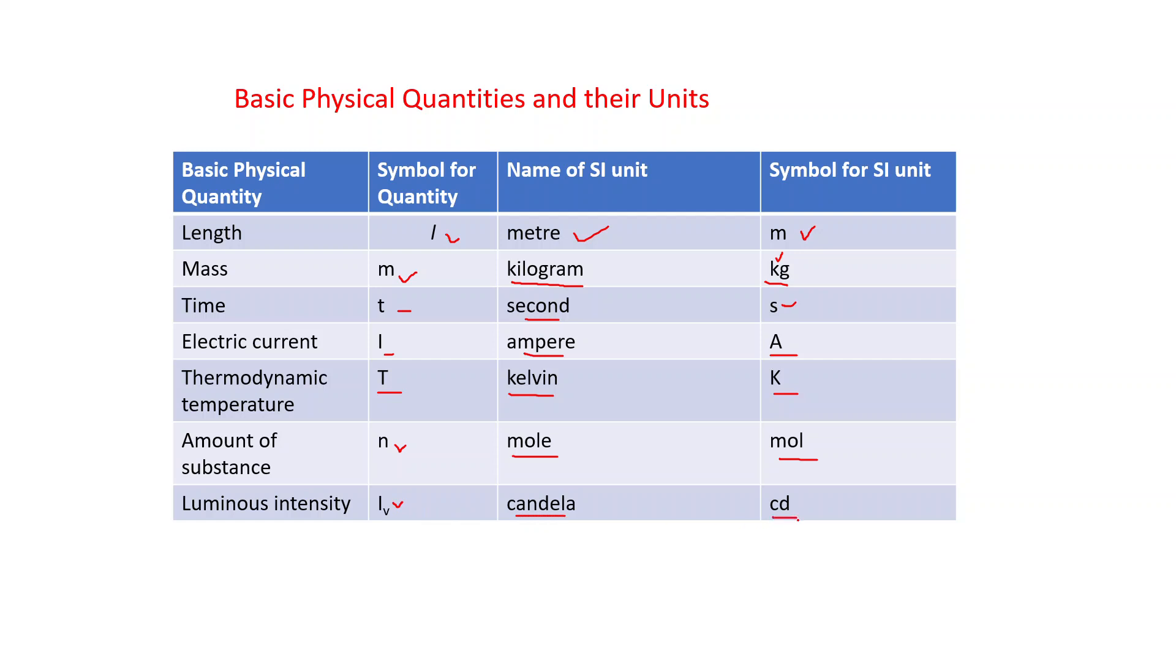One thing you have to remember, that is these symbols of any unit cannot be represented in the plural form. Like, if you write that mass of any person is 60 kilograms, when you write in symbolic form of unit of mass, then we only write kg. We will not write it is kilograms, doesn't mean that you have to write K-G-S. This is wrong pattern to write the symbol. Symbol does not have any plural. This is written as 60 kilogram.